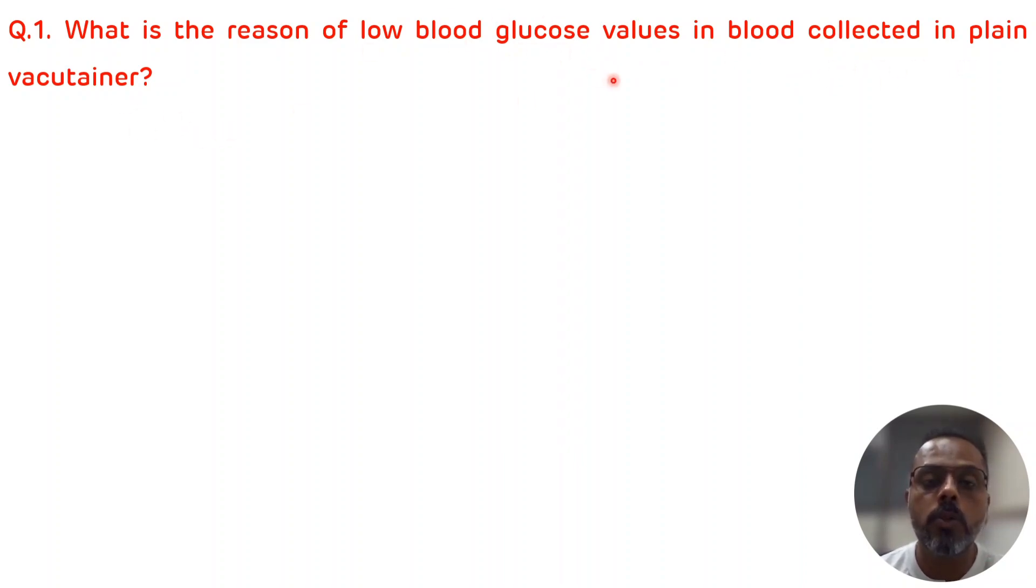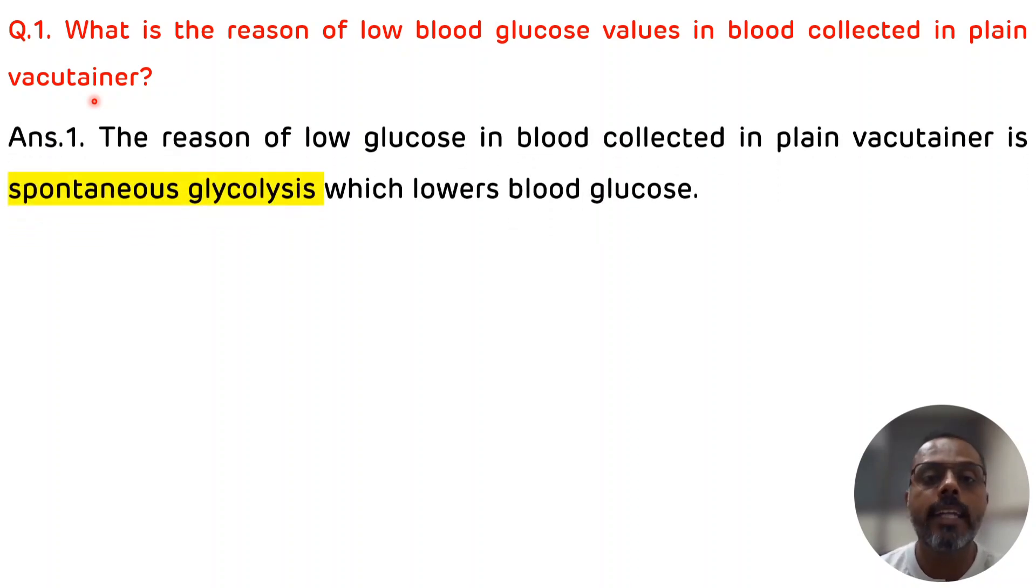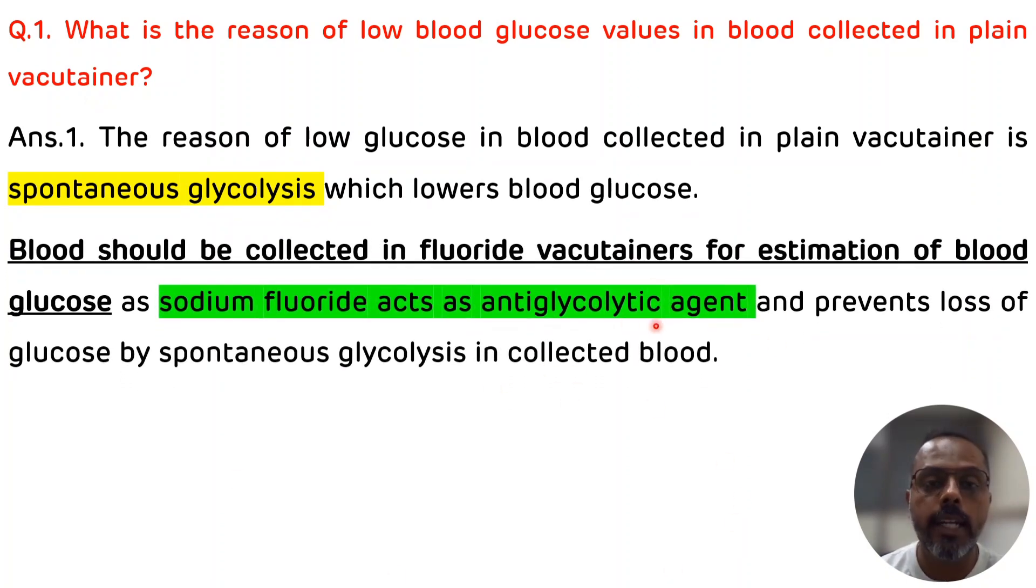The reason of low blood glucose value in blood collected in plain vacutainer is plain vacutainer doesn't contain any anti-glycolytic agent. There will be spontaneous glycolysis occurring which results in low blood glucose. So the correct vacutainer for the collection of blood for glucose estimation is sodium fluoride vacutainer. Sodium fluoride vacutainer contains fluoride as an anti-glycolytic agent which will inhibit the enolase enzyme of glycolytic pathway, so there will be stoppage of glycolysis.